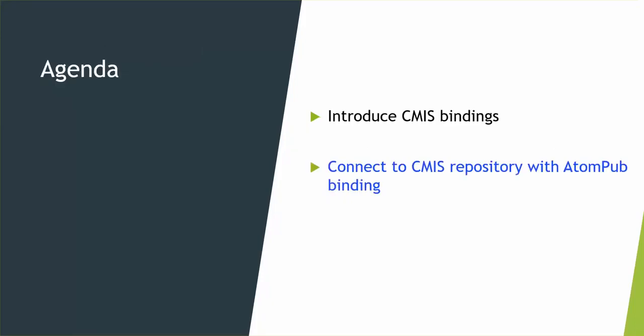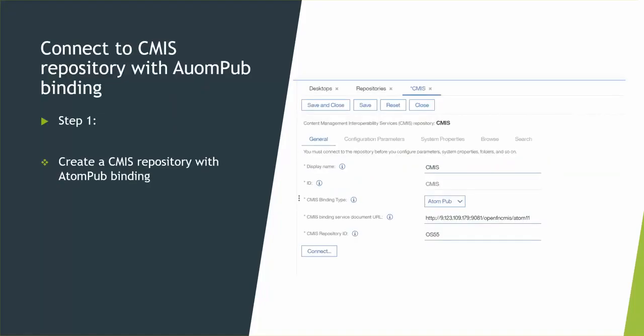Let me show you how to connect to a CMS repository with ATEMPOP binding in Content Navigator. The first step is to log into the ICN admin desktop, then go to the administration view and create a CMS repository. In that screen, you need to specify the CMS binding type as ATEMPOP and then enter the binding service URL.